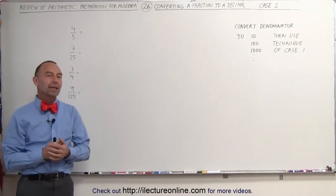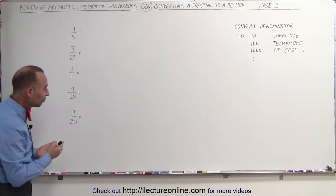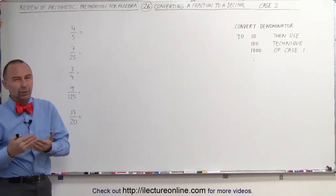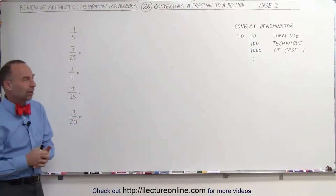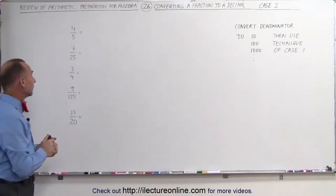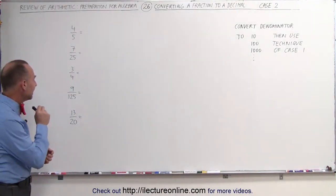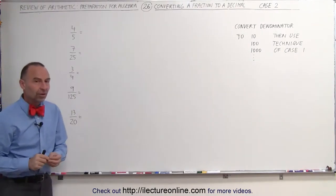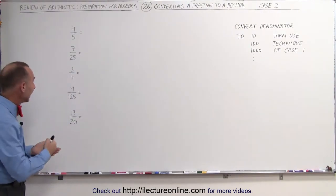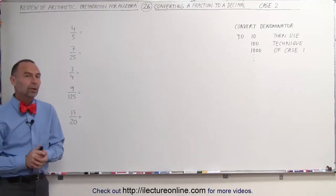Welcome to Electron Line. Here we're still going to convert a fraction to a decimal, but in this case the denominator is not a 10, a 100, or a 1000, or something like that — one with a bunch of zeros. We have a different number in the denominator, but in every one of these cases the denominator easily fits into either a 10, a 100, or a 1000, and so forth.